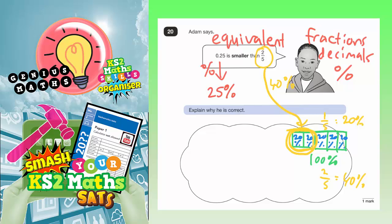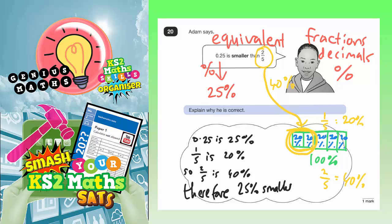And once we've explained that and written on the diagram, you've then just got to write your explanation. So you could say 0.25 is 25%. And you could say that one-fifth is 20%. So two-fifths is 40%. Therefore, 25% is smaller than 40%. So 0.25 is smaller than two-fifths.